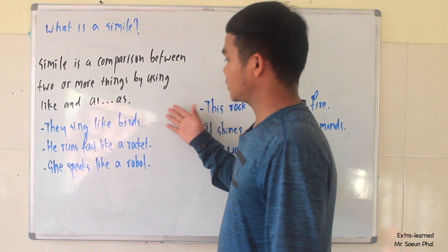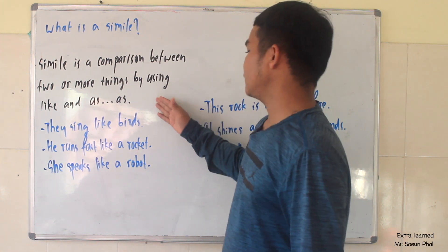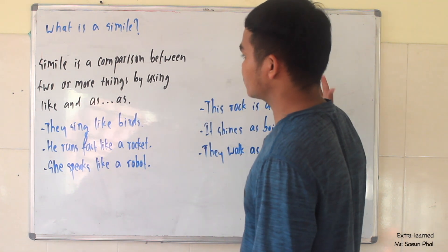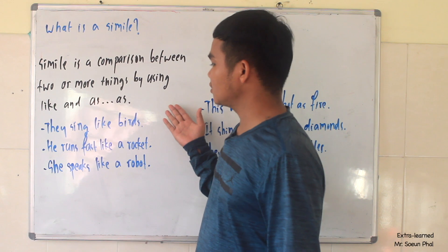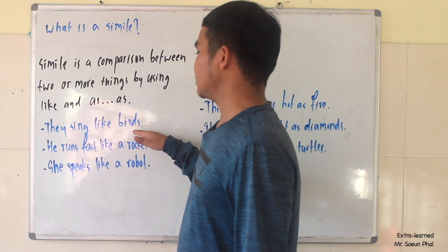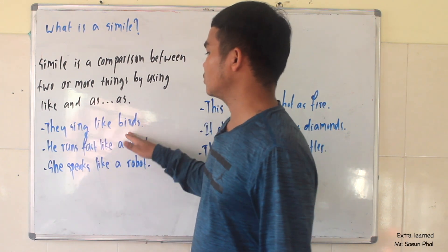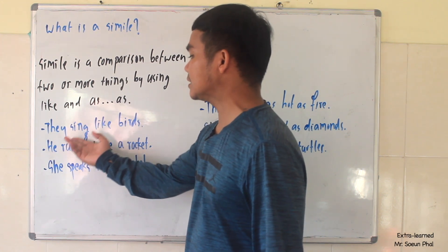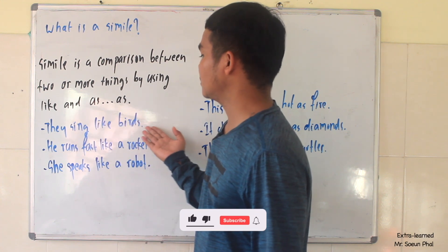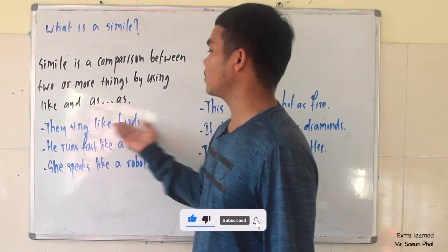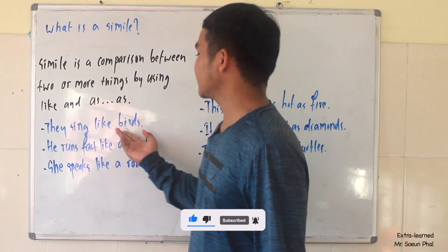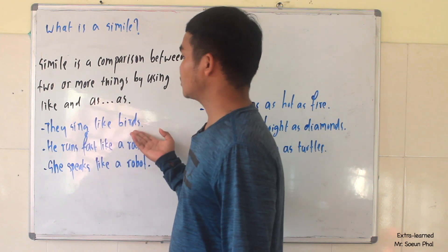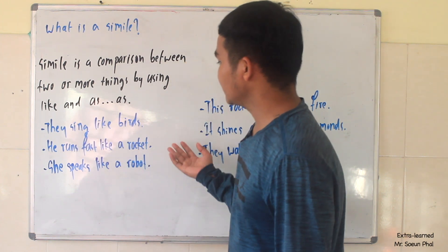We have two parts. The first part has examples using 'like' and the second part has examples using 'as-as'. Let's take a look at the first one: 'They sing like birds.' In this sentence, we compare how they sing to birds — that means they sound like birds. So we use 'like' here to compare between the two things.